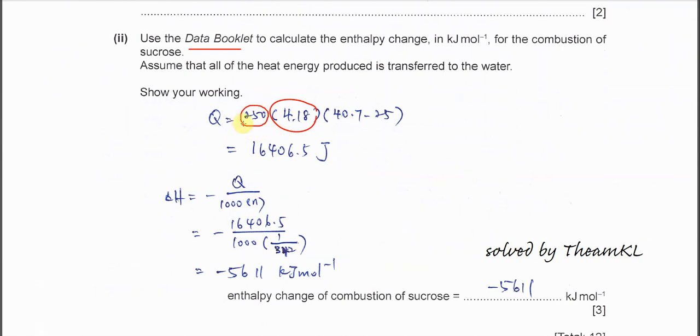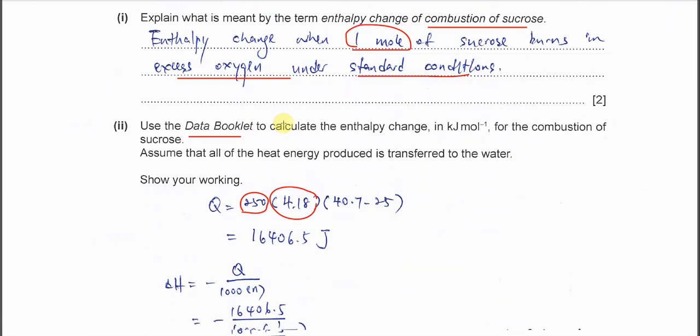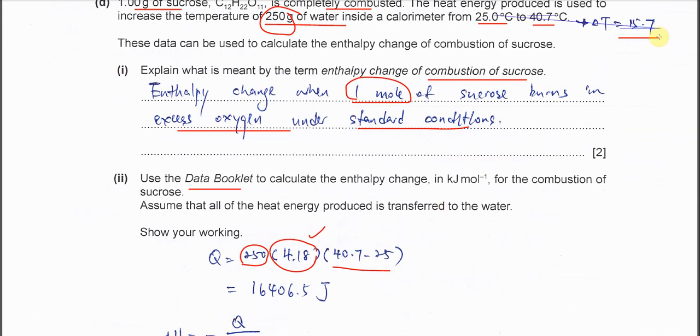The mass is the mass of the water used, which is 250 here. 4.18 is just the specific heat capacity of water because water is the one that absorbs the heat. So we must use the specific heat capacity of water. Delta T is about 15.7 here.